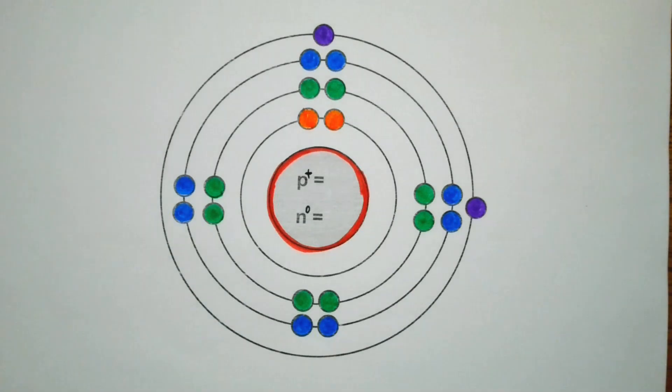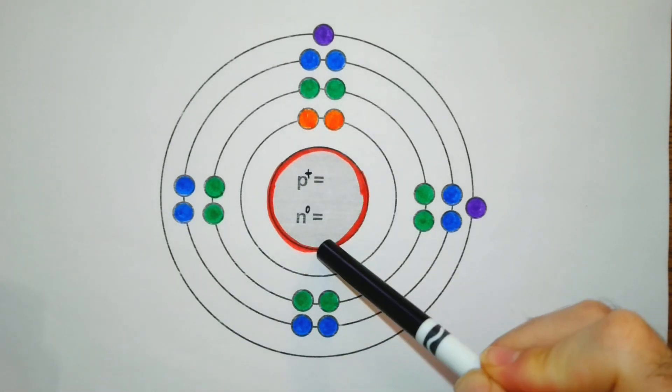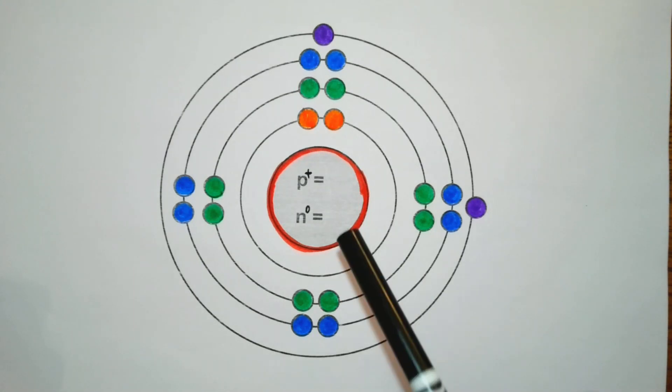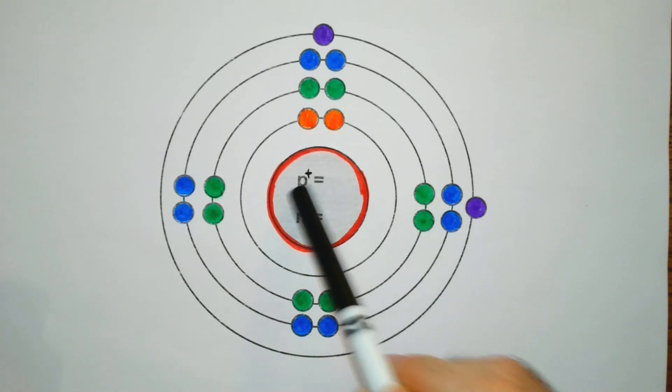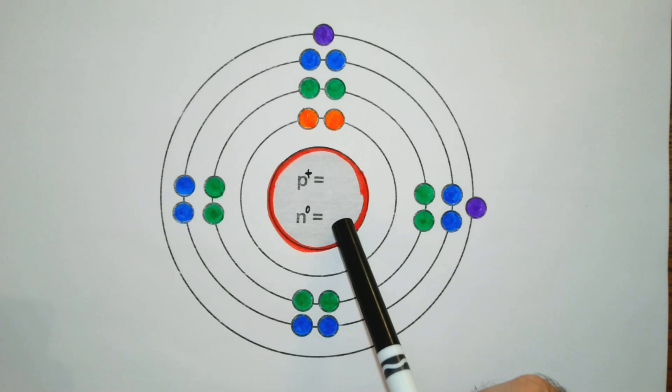Let's do a quick review. When it comes to Bohr models, we draw a circle in the very center and that's going to represent the nucleus. Inside the nucleus we have protons and neutrons, so we'll put p equals the number of protons, n equals the number of neutrons.